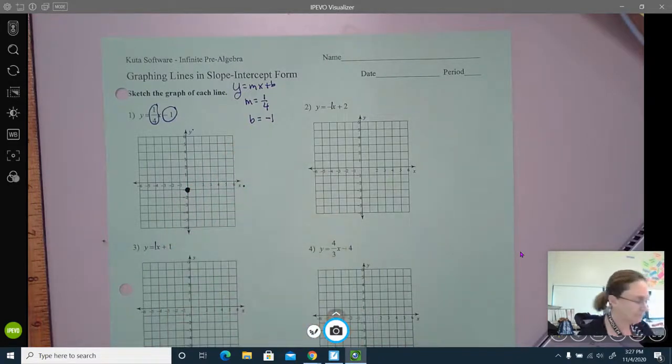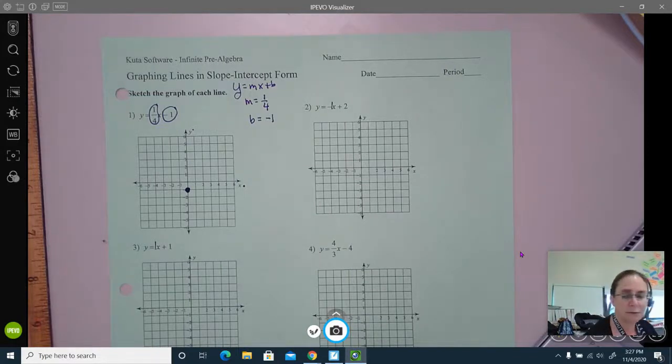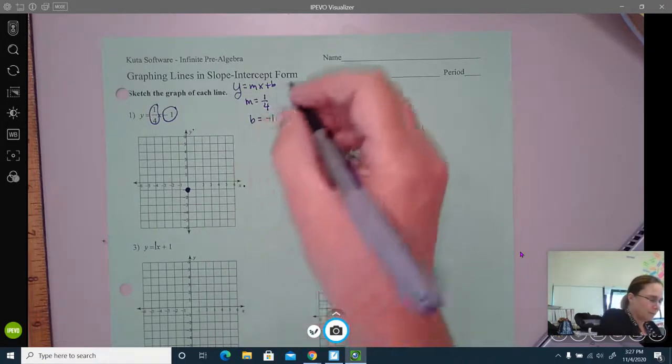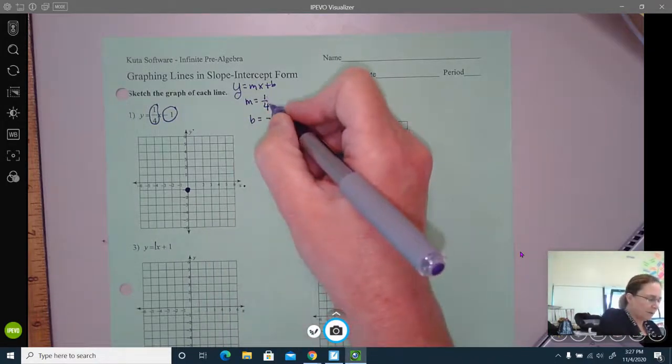From there, my constant rate of change, which is my slope, is based on the slope. So I have one-fourth. The one is your rise.